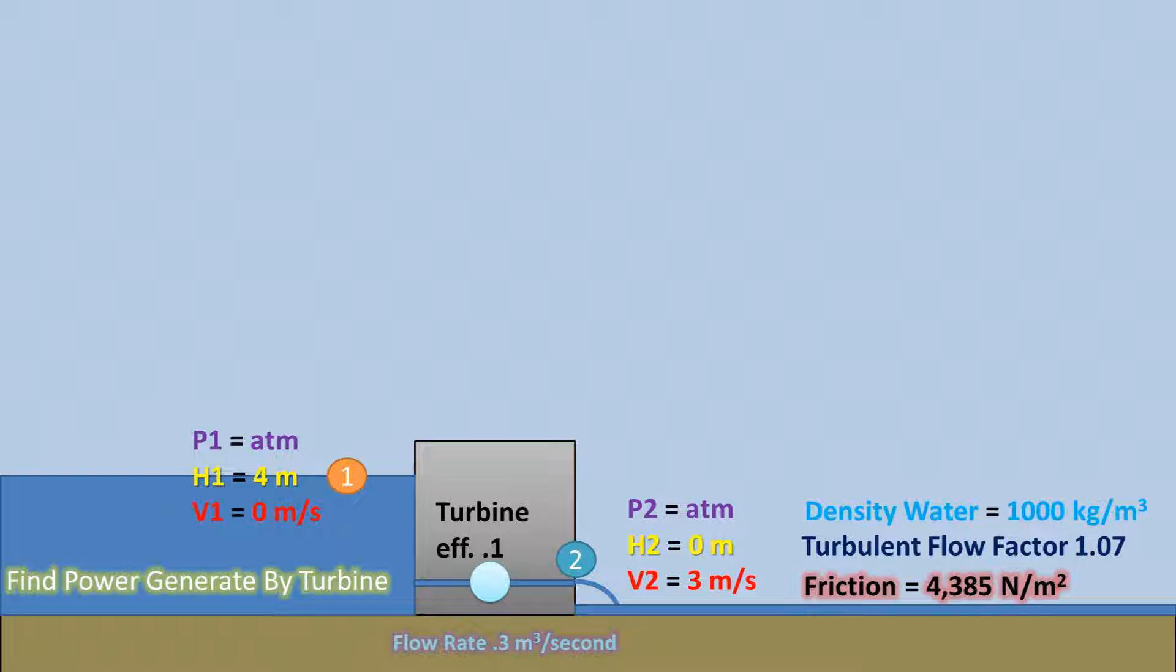We want to find the amount of power the turbine can extract from the water. All the values in this problem are made up, so it probably won't be realistic. How do we go about solving this one?